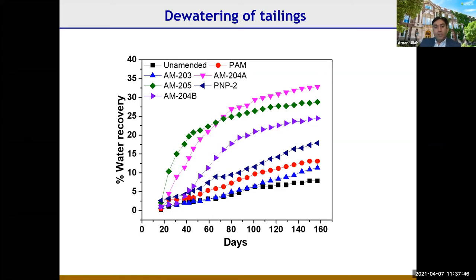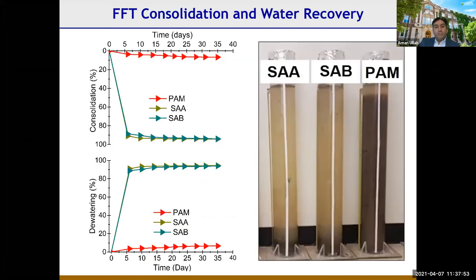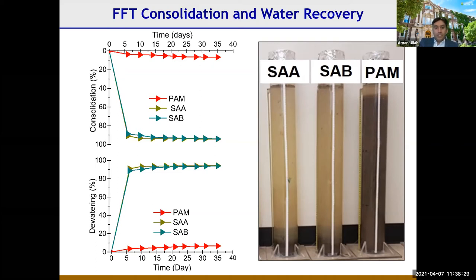With COSIA's help we conducted larger trials using 10-liter columns. The consolidation was much faster across different solid content percentages — mature fine tailings with higher solid content settle more slowly, but even those showed very quick settling within 35 days when using our material in 10-liter column tests.